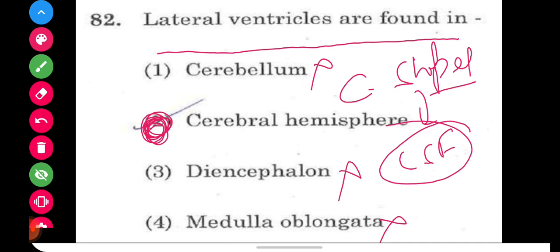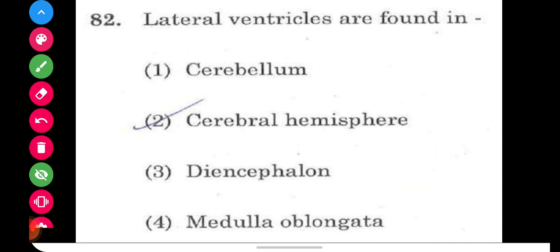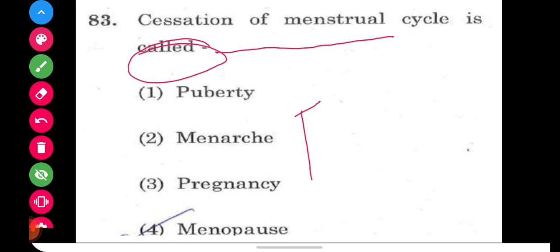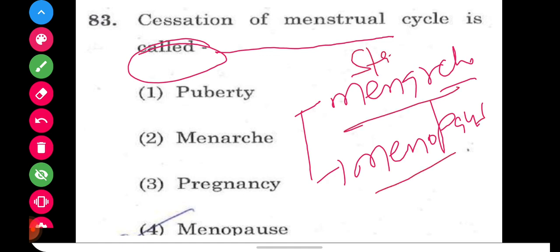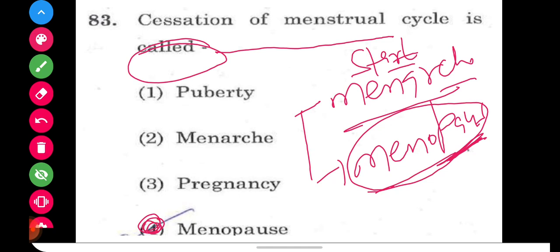Question number 83: cessation of the menstrual cycle is called what? There are two key terms: menarche, which is the starting point when the menstrual cycle begins, and menopause, which is the cessation — when the cycle stops. Since the question asks about cessation, the right answer is option number four, menopause.